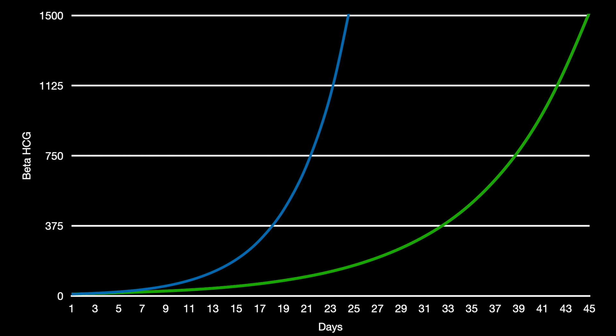If we assume a beta hCG starts at 10 on day one and increases by the standard accepted normal values, shown here in blue, it will increase quite rapidly and hit 1,500 — and that would put the patient at only 21 days from implantation, about five weeks from their last menstrual period. At five weeks, we often don't see a lot of signs of pregnancy within the uterus. The green line shows a beta hCG increasing at only about 30%, and that takes up to 45 days to reach 1,500.